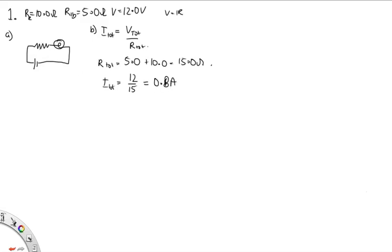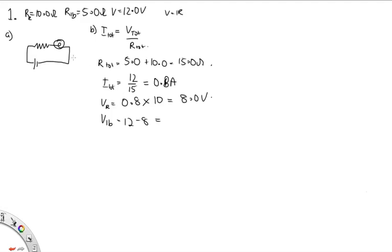So 0.8 amps is the current flowing through the resistor and also through the light bulb. Now we need to work out the voltage drop across each of them using Ohm's law. The voltage drop across the resistor is equal to the current, 0.8 amps, times 10 ohms, which gives us 8 volts. For the voltage drop across the light bulb, the total voltage drop is 12, so 12 minus 8 gives us 4.0 volts.